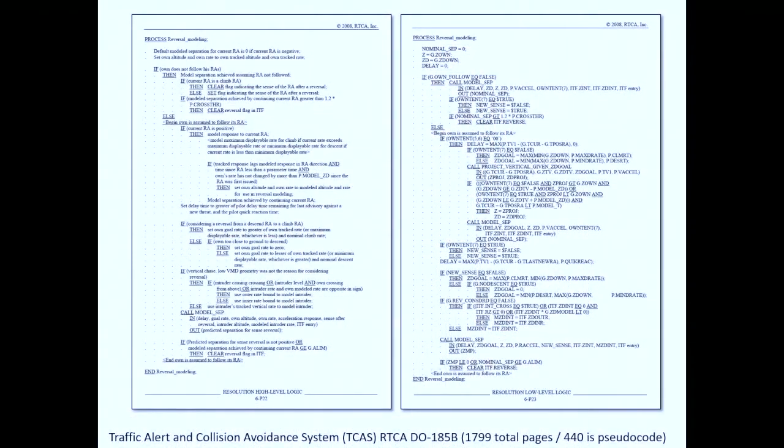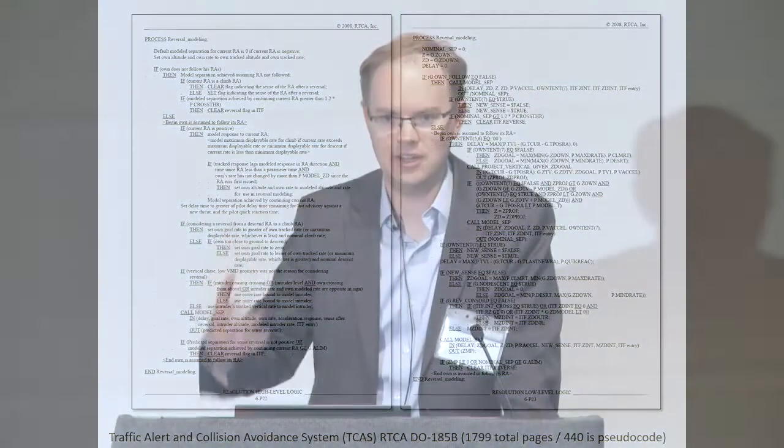This is a screenshot of two pages from the specification RTCA DO-185B. It's 1,799 pages — 440 of it is pseudocode. The challenge is that there are so many different edge cases you have to worry about in order to provide the level of safety we expect from commercial air transport. It's really easy to write maybe half a page of code that works about 99% of the time, but getting it to a safety level around 10 to the minus 9 probability of collision requires a lot of effort.